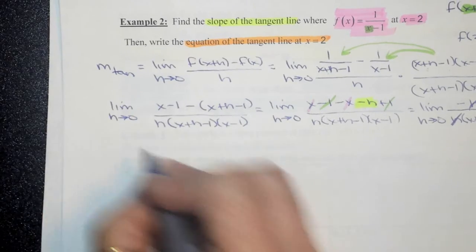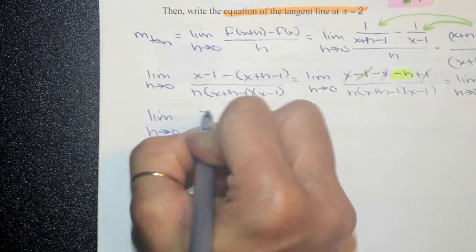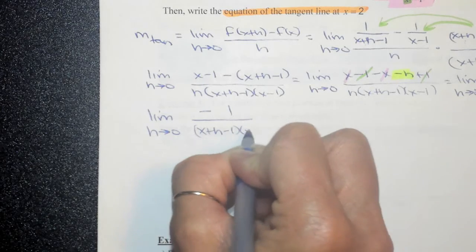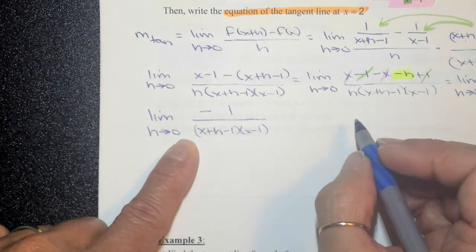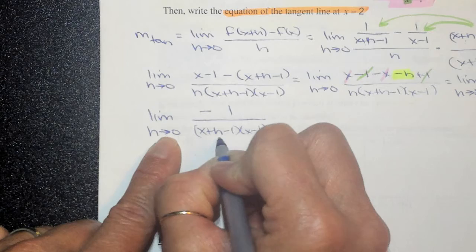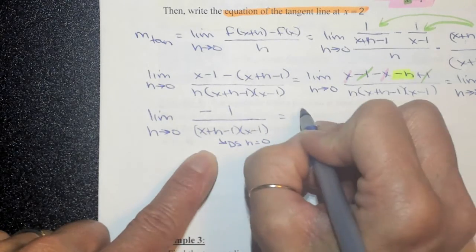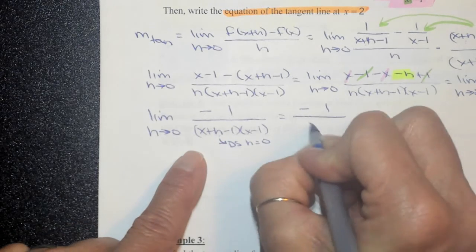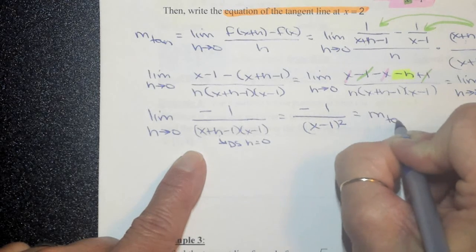After canceling h, I have the limit as h approaches 0 of negative 1 over x plus h minus 1 times x minus 1. Now I use direct substitution — plug in 0 for h. The h term disappears and I'm left with negative 1 over x minus 1 squared, which is the formula for the slope of the tangent line at any point on this curve.